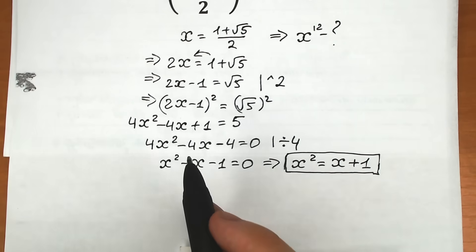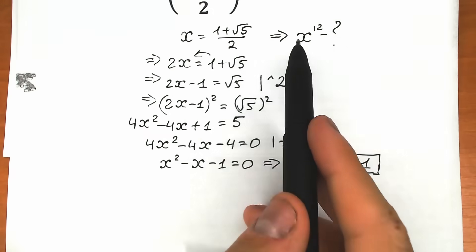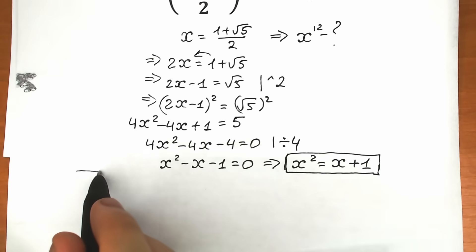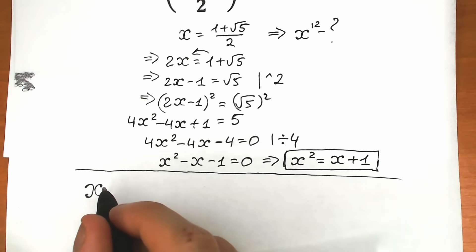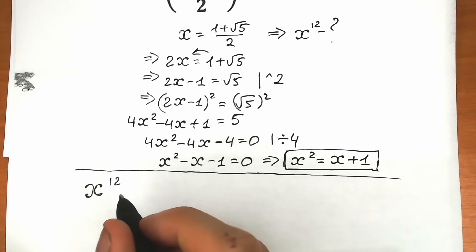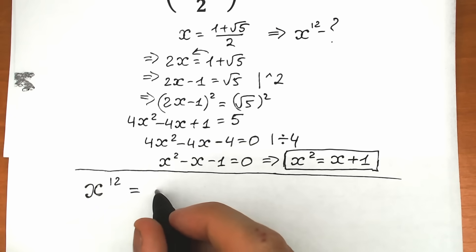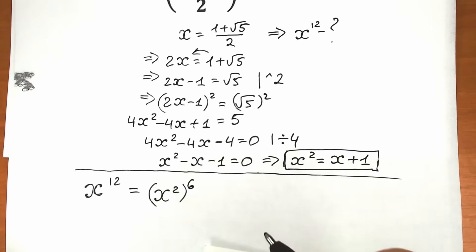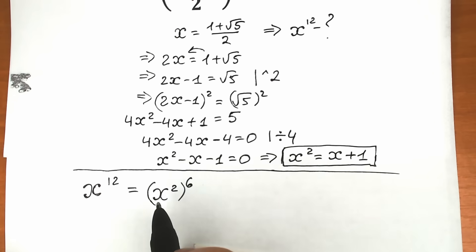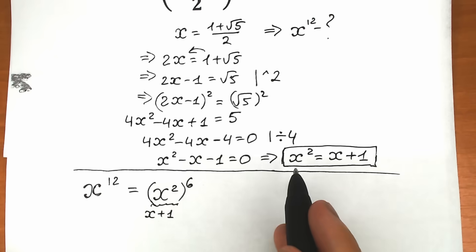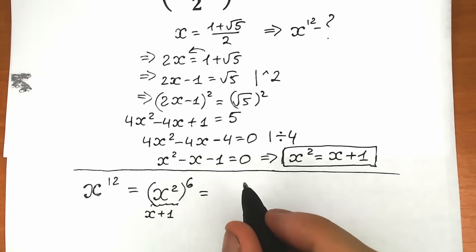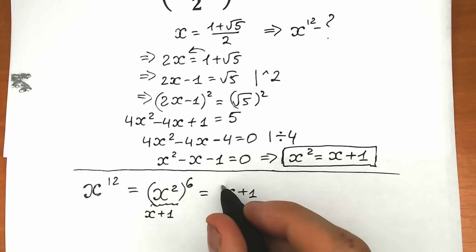Now let's solve the challenge. We need to find x to the 12th power. Note that x^12 = (x²)^6. Since x² = x + 1, we can substitute to get x^12 = (x + 1)^6.